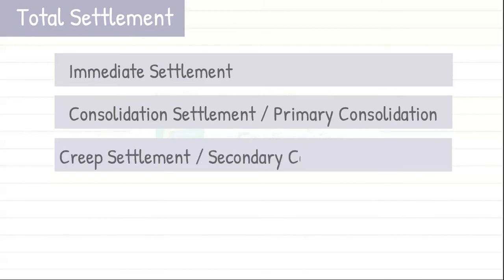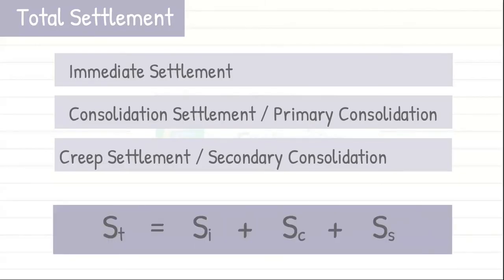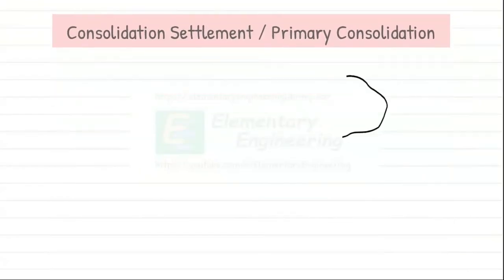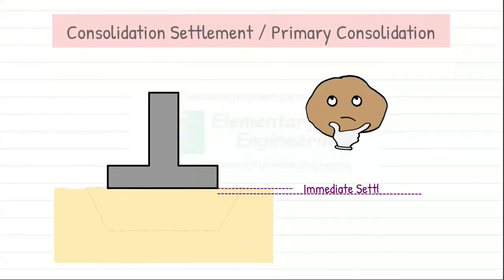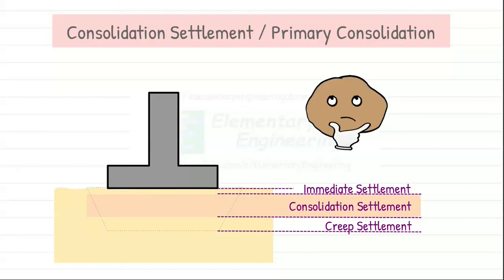We also outlined in that video that total settlement of the soil has primarily three components: immediate settlement, consolidation settlement or primary consolidation, and creep settlement or secondary consolidation. The total settlement of soil is the sum of all three factors. We mentioned that consolidation settlement is the most dominant factor in the total settlement. Understanding and predicting the larger settlements that occur during primary consolidation is critical for safe and stable design.